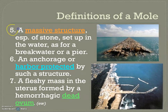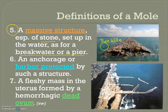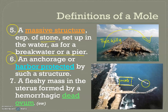Definition five: a massive structure, especially one made of stone, used as a breakwater or a pier. If you saw the movie Free Willy, this is what Willie sails over at the end of the movie — spoiler alert, sorry. Definition six: the anchorage or harbor protected by such a structure, which could also be called a mole. I'm sure you've seen these at the shore.